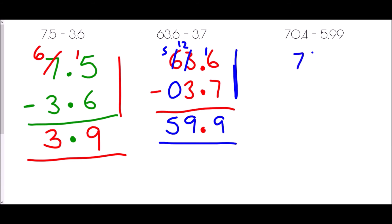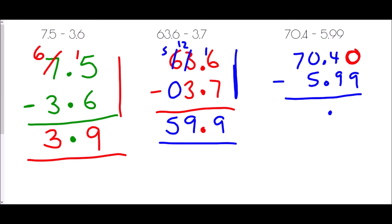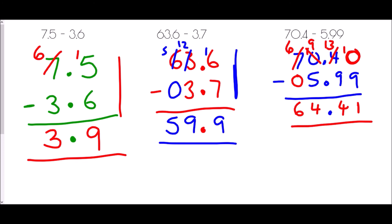Lastly, 70.4 take away 5.99. Decimal points lined up; 70.4 becomes 70.40. The hundredths: 0 take away 9 — borrow to make 10 take away 9 is 1; the tenths digit becomes 3. Then 3 take away 9 — need to borrow, but next digit is 0 so double borrow: the 7 becomes 6, the 0 becomes 10, borrow 1 to make 9, giving 13 take away 9 is 4. Then 9 take away 5 is 4, and 6 take away 0 is 6. Answer: 64.41.